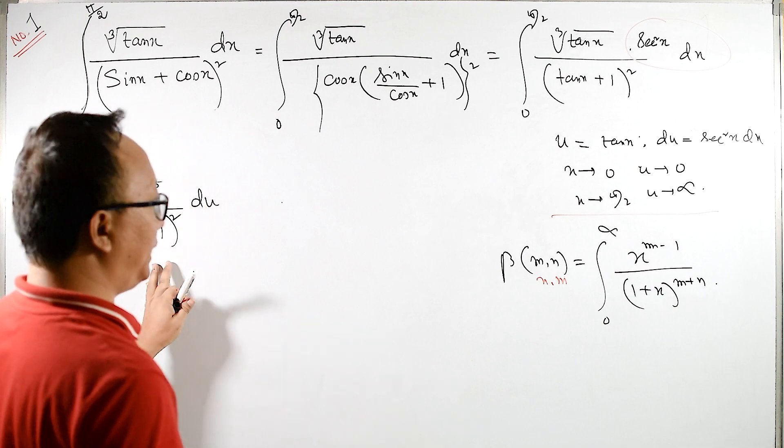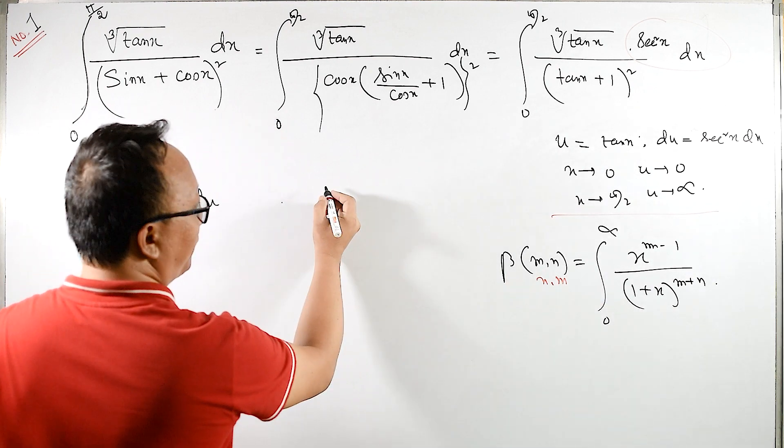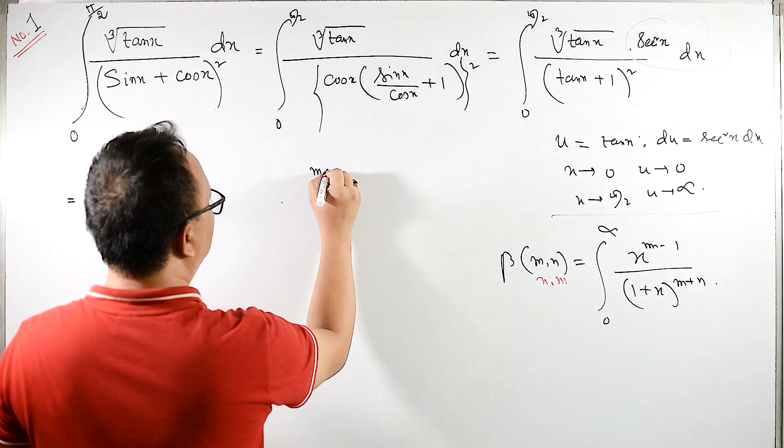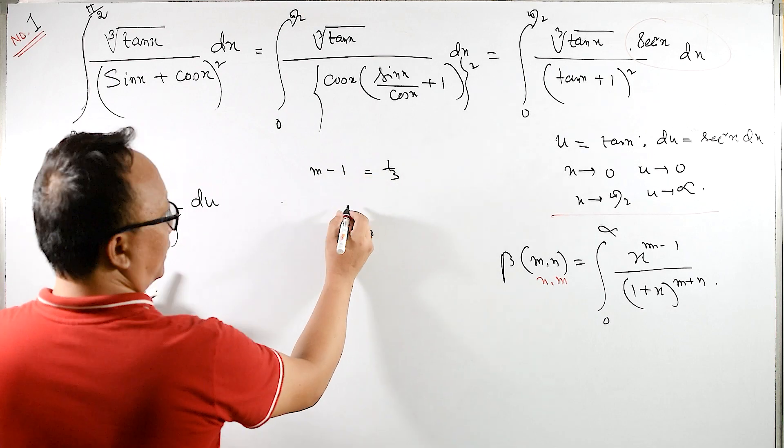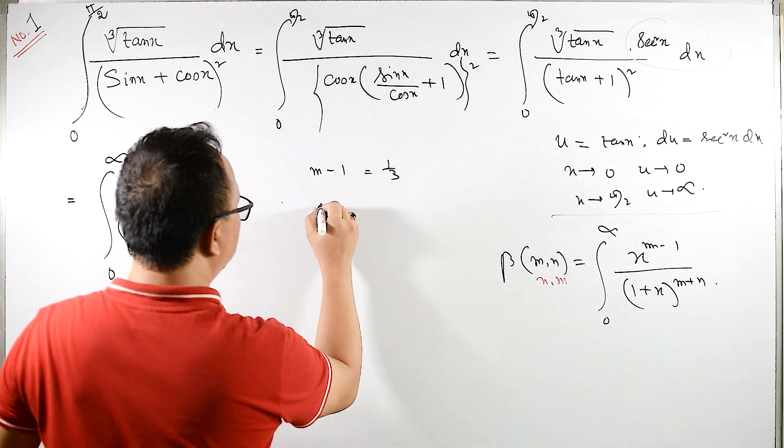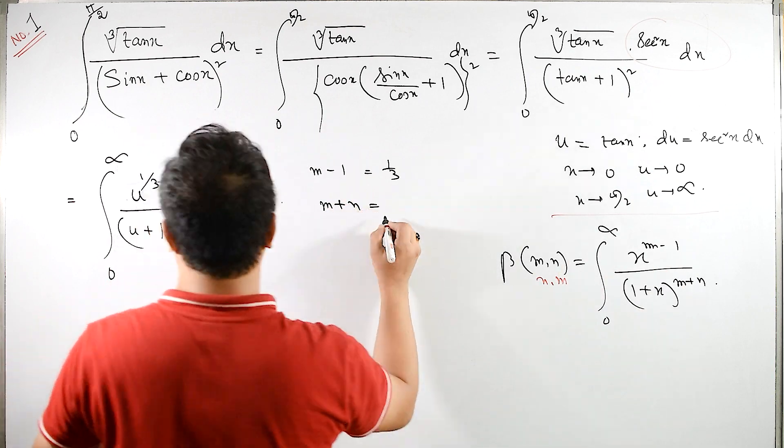Now, if I compare with this, with this, what we have? We have m minus 1 equals to 1 by 3, as well as here m plus n is, m plus n equals to we have 2.